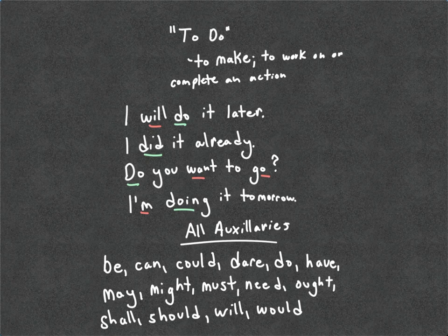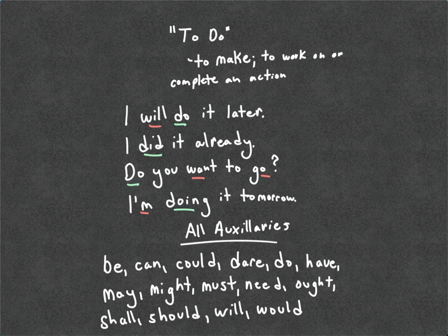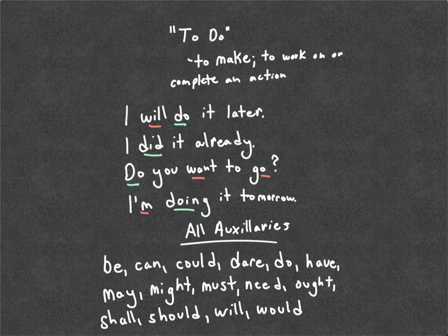In English, we also use "to do" a lot. To do means to make something, to work on something, or to complete an action: "I will do it later," "I did it already," "Do you want to go?" "I'm doing it tomorrow." All of these different ideas are expressed using the same verb. Here are all the auxiliaries: be, can, could, dare, do, have, may, might, must, need, ought, shall, should, will, and would.